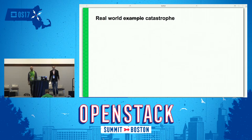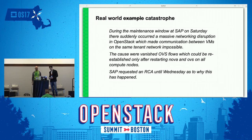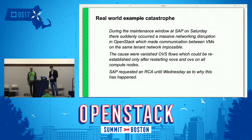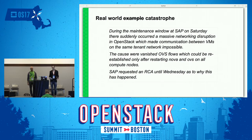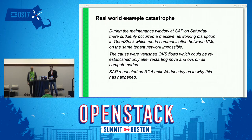Here's a real-world example — or perhaps a catastrophe. On a beautiful Saturday morning, we had a well-prepared maintenance window. Everyone was feeling ready to start early, finish early, and enjoy the weekend. But during the maintenance, we ran into massive network problems. The VMs stopped communicating with each other, with no clue why — since we had only applied some OpenStack patches unrelated to any networking feature. Eventually we stabilized things by restarting all Nova and OVS services on all hypervisors.